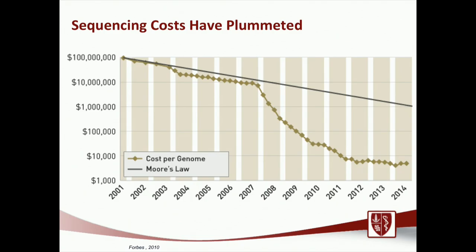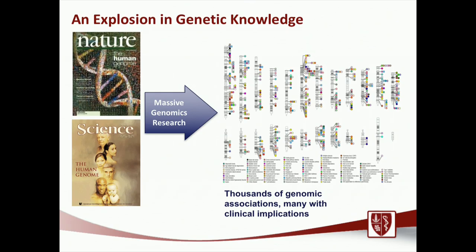The first human genome sequence took 13 years and over a billion dollars to complete. Now we're sequencing human genomes in a matter of a week or two at a reagent cost of just a few thousand dollars. With this decreased cost, we've really seen an explosion in genetic knowledge. This spans many cancer fields, not just kidney cancer, and has opened our eyes to the genes and mutations that drive cancer as well as the predisposition to cancer.